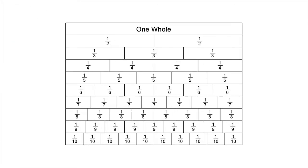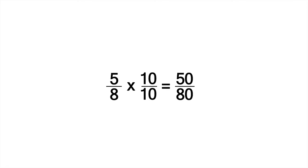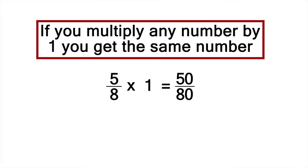Here are two ways of justifying what we've done. From our fraction wall, we know that 10 tenths is the same as one whole, or simply one. So multiplying 5 eighths by 10 tenths is really just multiplying 5 eighths by 1. But we know that if you multiply any number by 1, you get the same number.